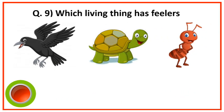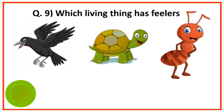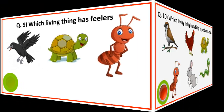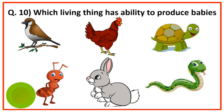Which living thing has feelers? Insects. Which living thing has the ability to produce babies? Mammals.